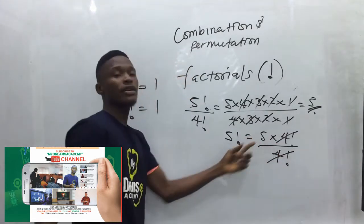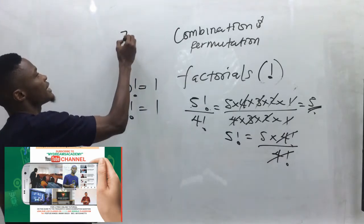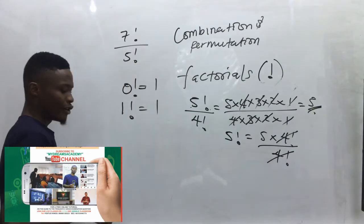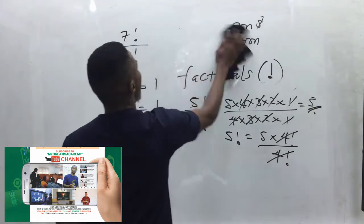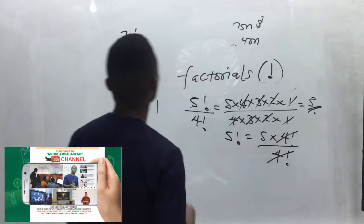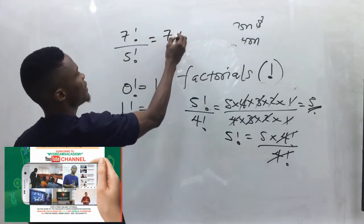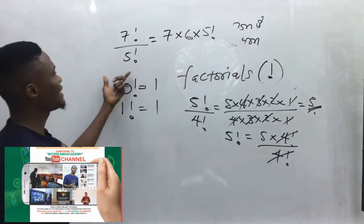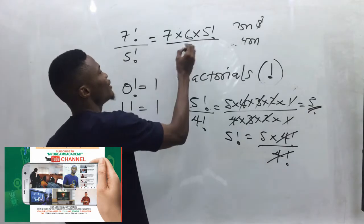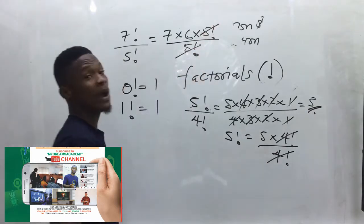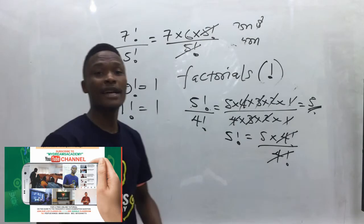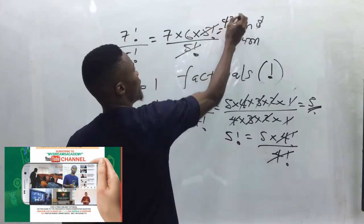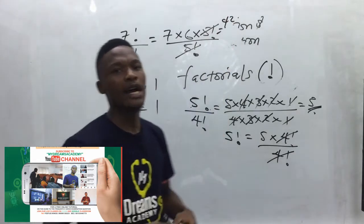What if the question says seven factorial over five factorial? To save time, don't write the complete value. Simply write seven times six times five factorial, all over five factorial. This cancels and we are left with seven times six, which is 42.